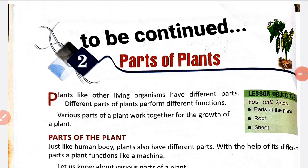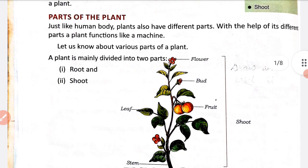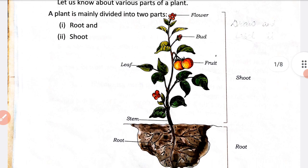Hello everyone, today we are going to continue Chapter 2: Parts of Plants. In the last video we learned that a plant has different parts, like the human body, and it is mainly divided into two parts: first is root and second is shoot.